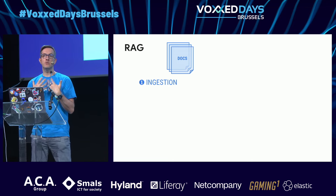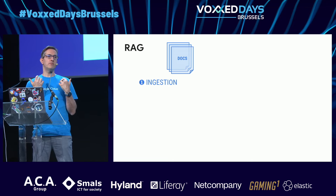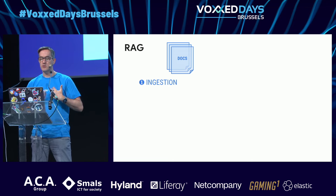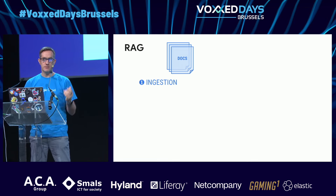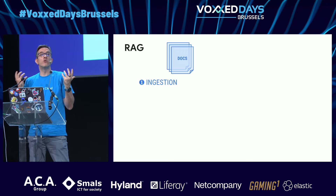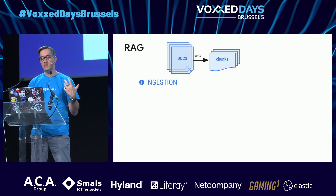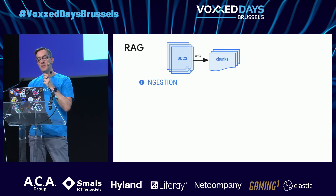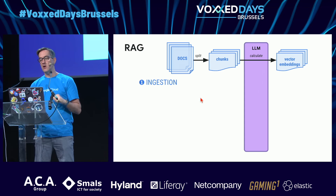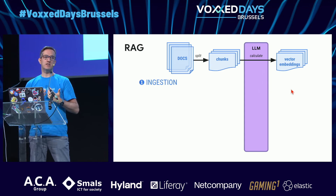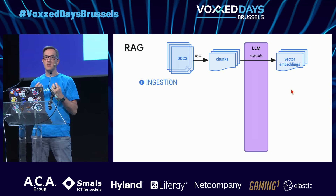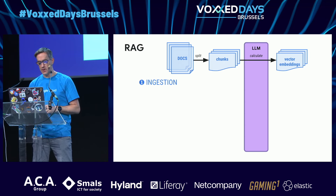You're going to take documents, split them into small chunks, and for each chunk create vector embeddings — a semantic meaning encoded into vectors of numbers — and store those vectors in a vector database. Vectors that are similar and close to each other bear the same semantic meaning. After ingestion comes the querying part.